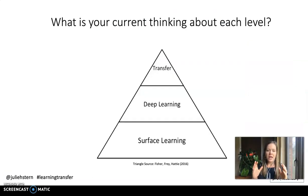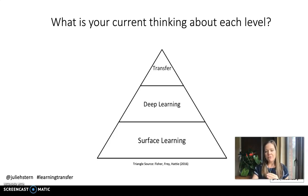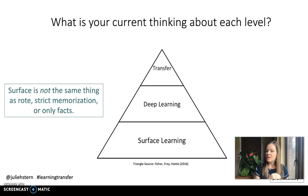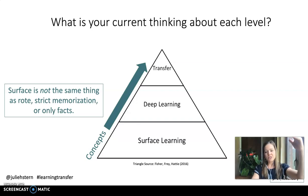Here's a visual I love to use when thinking about teaching for transfer. It's from Visible Learning for Literacy. The idea is that there's surface level learning, and students have to acquire an initial amount of surface level learning in order to get to deep learning, and then they can transfer their learning to new situations. The aha moment for me was learning that surface is not the same thing as rote memorization or only facts — that's part of it, but not the only part.